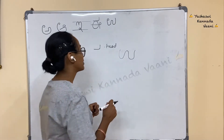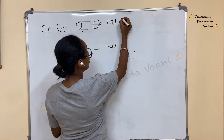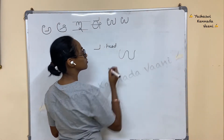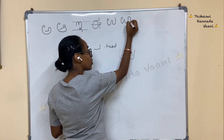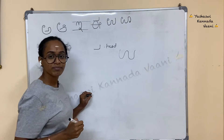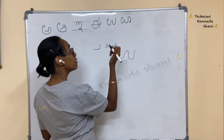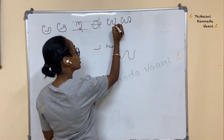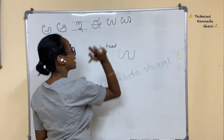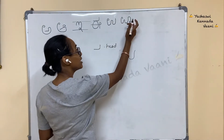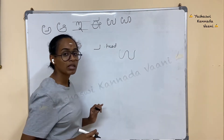Very good. Next letter is U (ಊ). Write same as U (ಉ), then come down again and draw a zero here. Uta — meal, Uti. Remember, you should never put the zero at the top — that is wrong. Here it is a plain line, but here you should put the zero compulsory. That is U (ಊ).